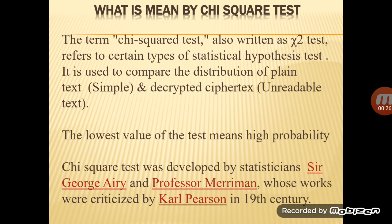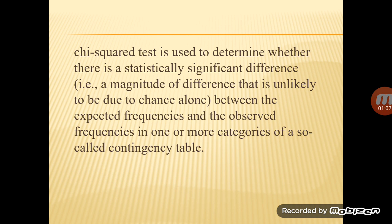The chi-square test is also known as the X-square test, which represents certain types of statistical hypothesis testing. The lowest value of the test means the highest probability. The chi-square test was developed by statistician Karl Pearson in the 19th century. It is used to determine whether there is a statistically significant difference between expected frequency and observed frequency in one or more categories of a contingency table.